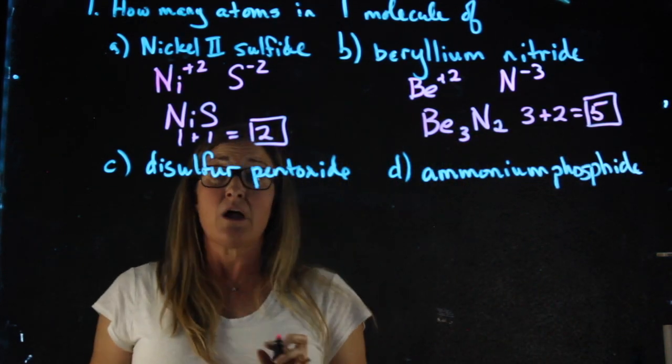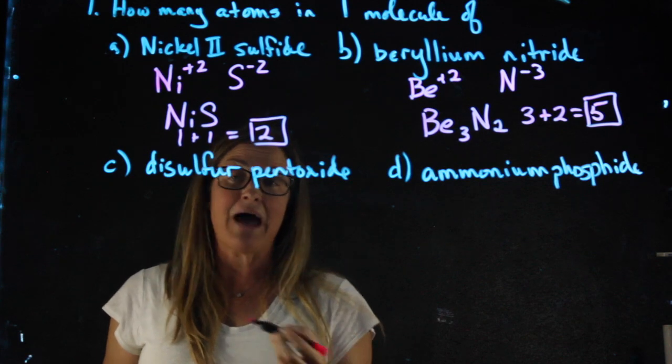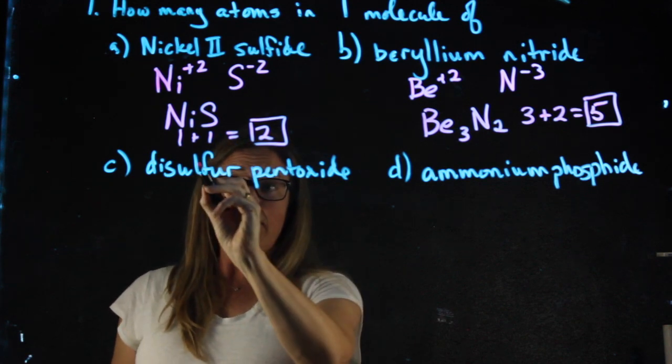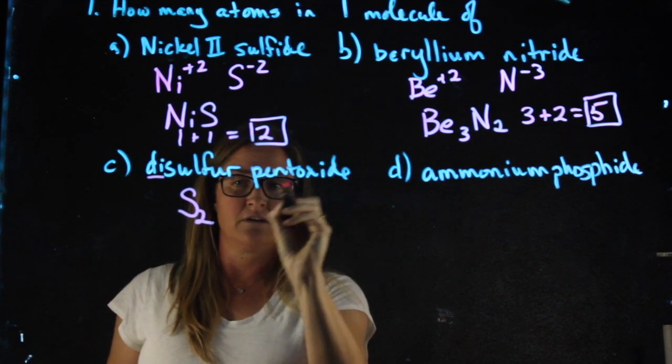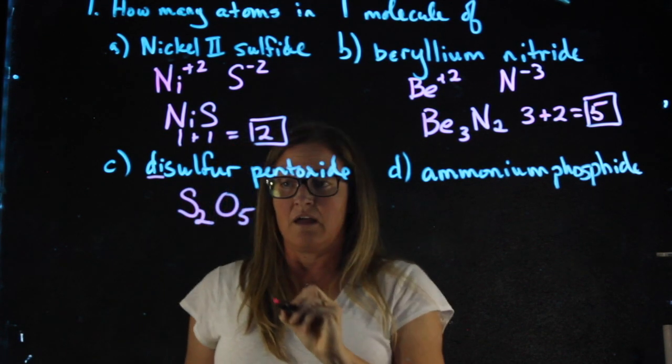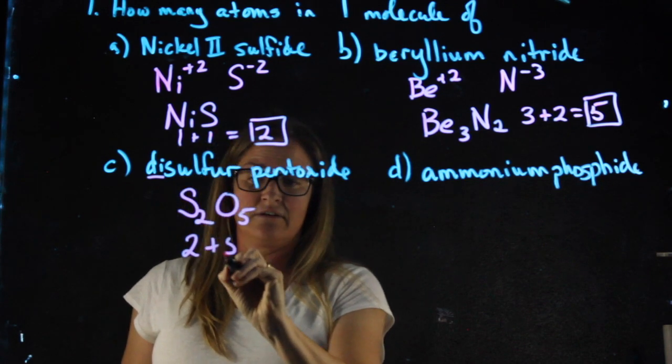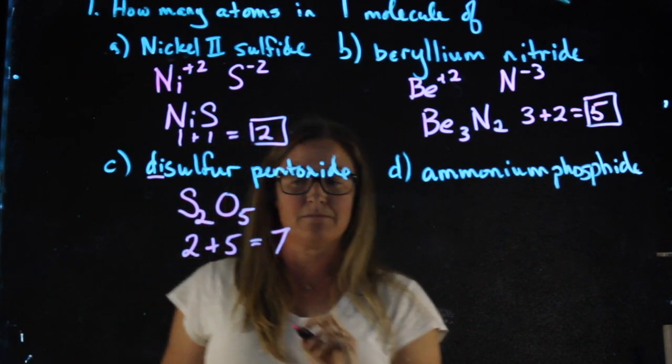Disulfur pentoxide. When I'm using the Greek naming system I don't think about charges at all. This is simply telling me there are two sulfurs and five oxygens giving me a total of seven atoms.